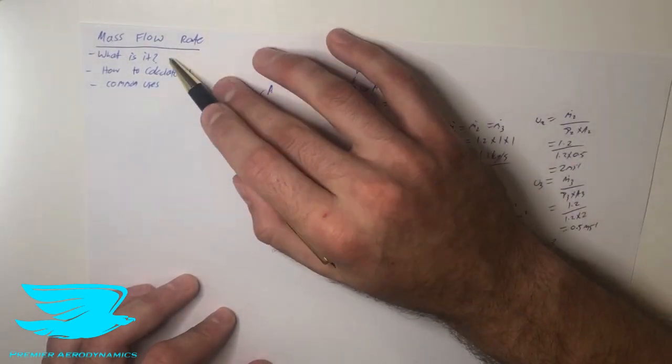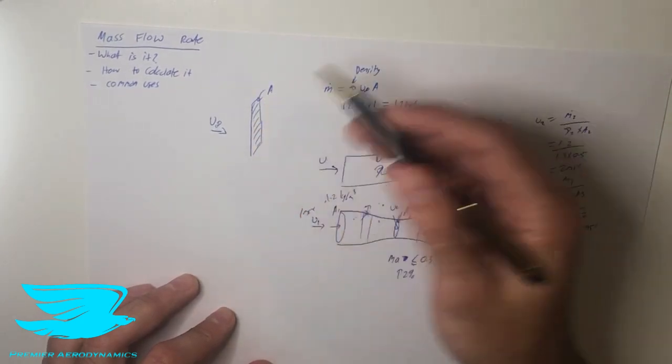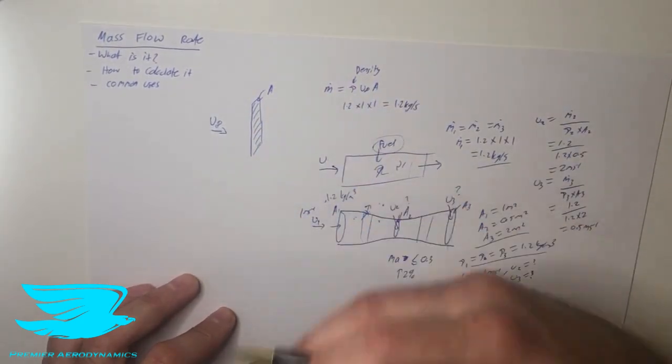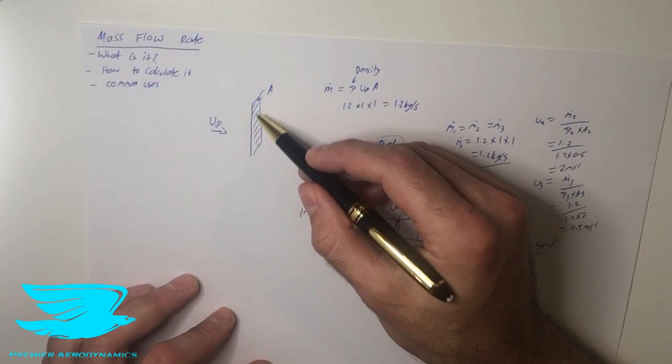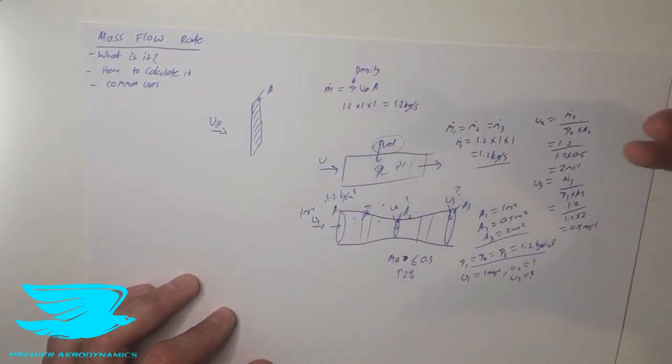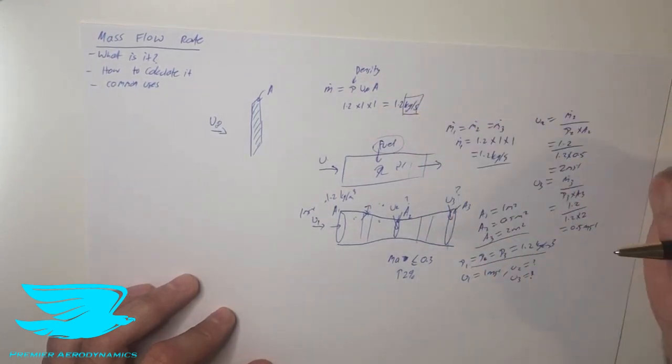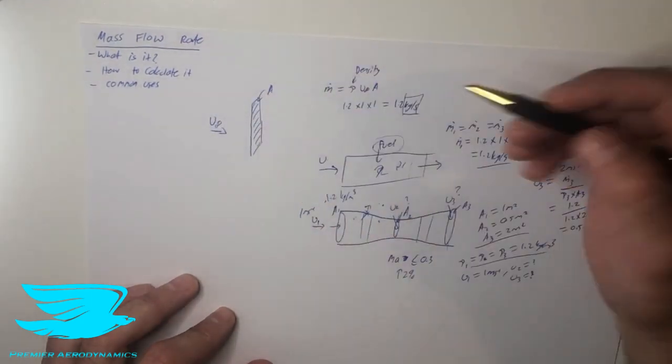So let's go quickly through again what the mass flow rate is, how to calculate it, and common uses just to recap. So what it is, is how much of a fluid, not just air and not just water, any fluid in general, is going through a cross-sectional area at every given point in time. So we use it per second, kilograms per second is the SI unit, but you can use whatever units you want as long as you remain consistent.